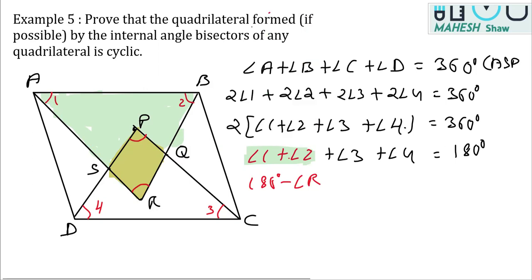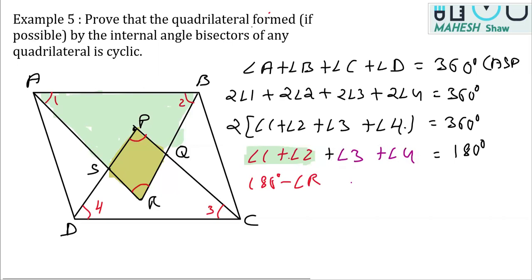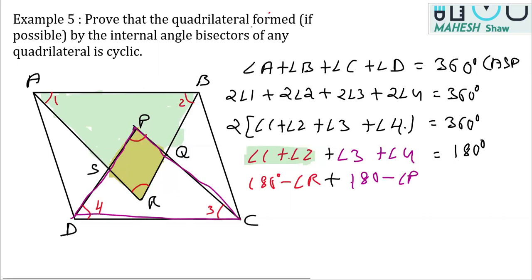Similarly, for the triangle containing angles 3, 4, and P, the sum of three angles of a triangle is 180 degrees. So angle 3 + angle 4 + angle P = 180°, meaning angle 3 + angle 4 can be replaced with (180° − angle P). Substituting both into our equation: (180° − R) + (180° − P) = 180°.